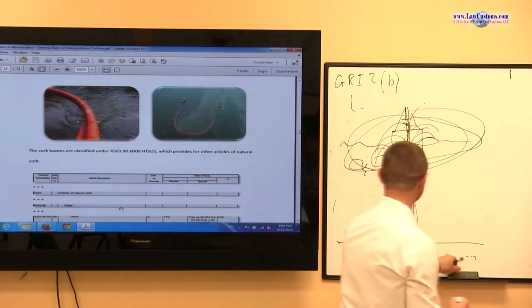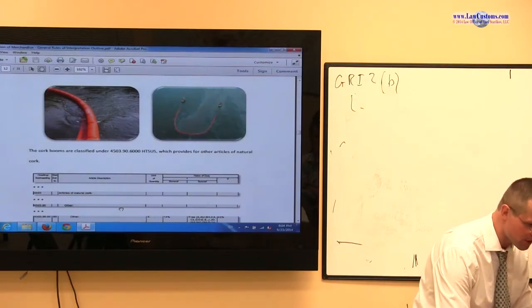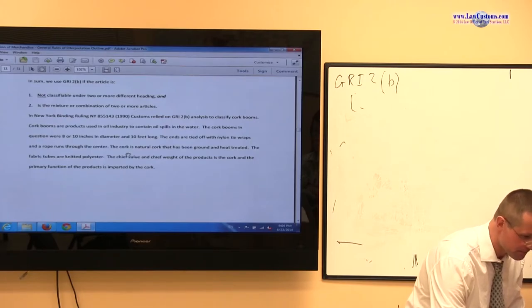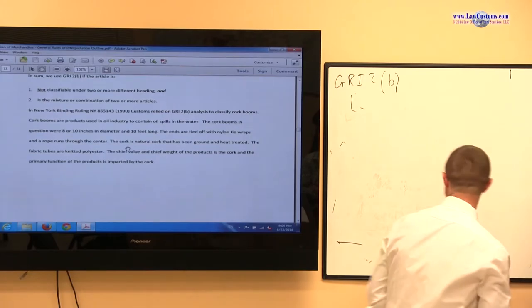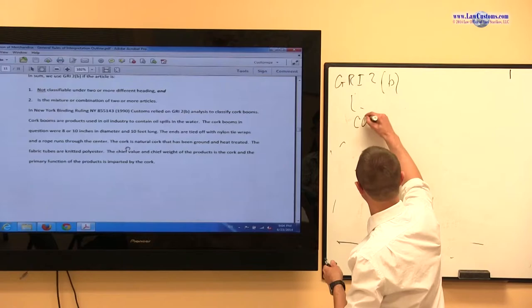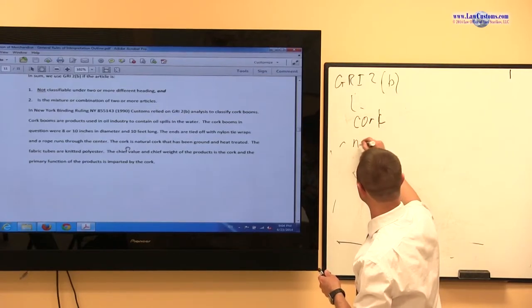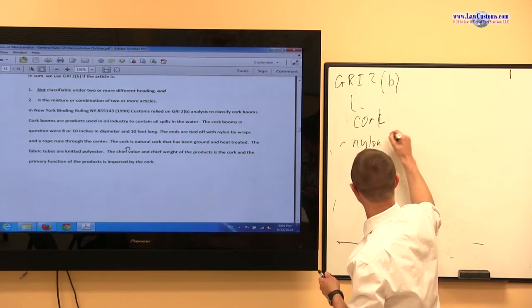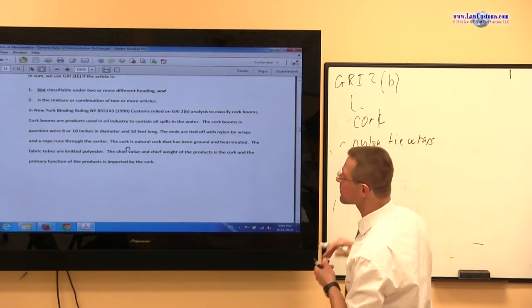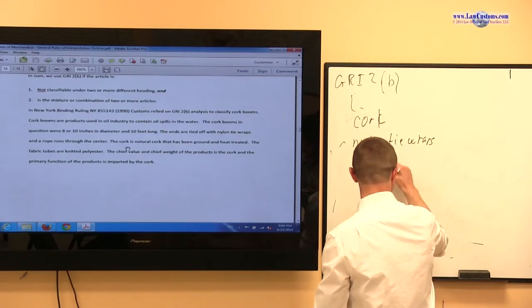So essentially, what you got? You got a mixture, you got a product combination which is made out of the following. Let's see. You have nylon, you have cork, you have nylon tie wraps, and you have a rope.